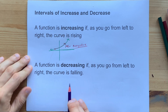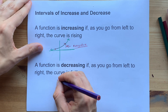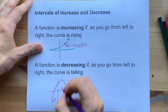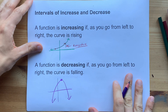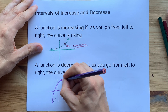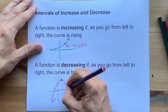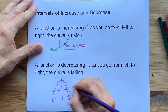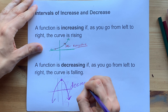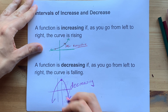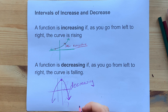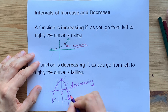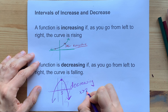It's decreasing if your pencil is moving downward. Let's do a parabola for this one. Starting at the top, if I move from left to right, my pencil is moving downward. So in this zone over here, I am decreasing. If I knew where my vertex was, I could say that it's decreasing from, say, x equals 3 onward — x greater than 3.